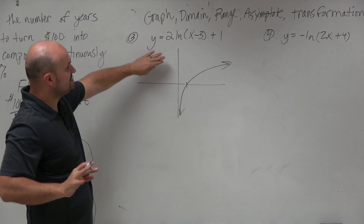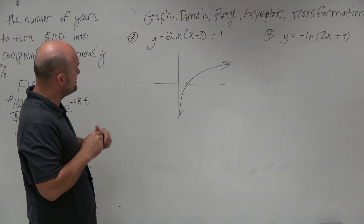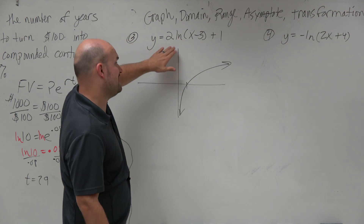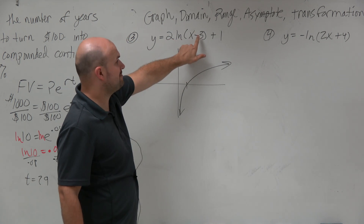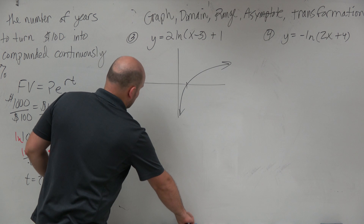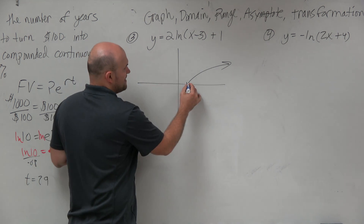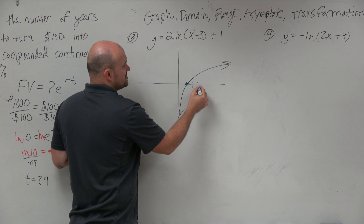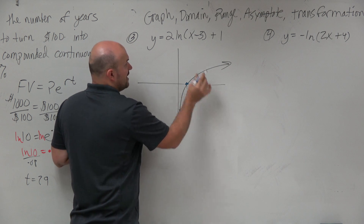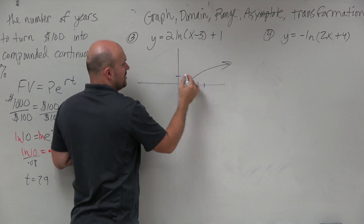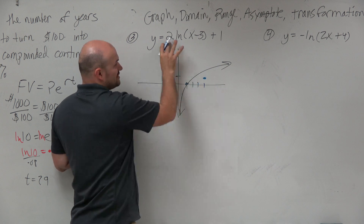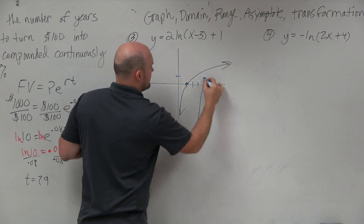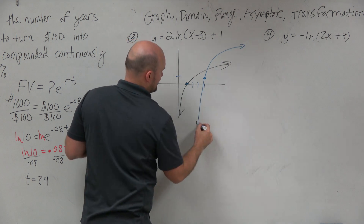So now we just need to apply the transformations. This 2 is going to be our vertical stretch — that is going to be vertically stretching our graph. We're going to have the minus 3, which is going to be shifting our graph 3 units to the right. So I can move my x-intercept 3 units to the right: 1, 2, 3. And then this 1 is going to be up 1 unit. The 2, remember, is vertically stretching your graph, so it's going to look maybe something like that.